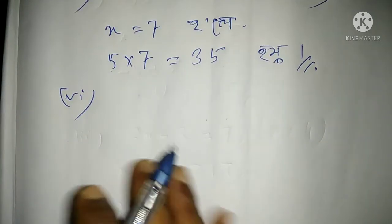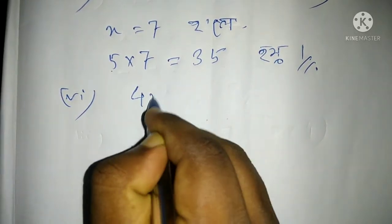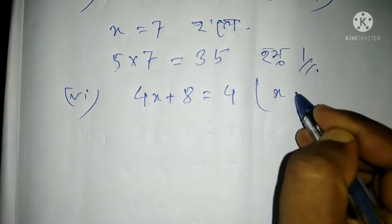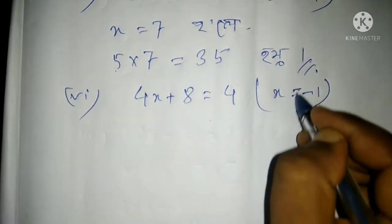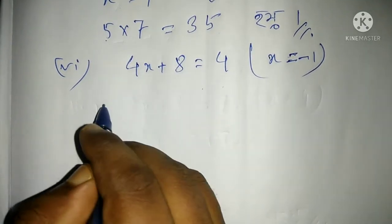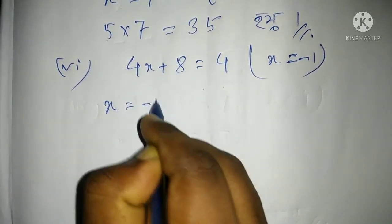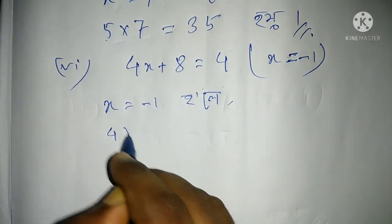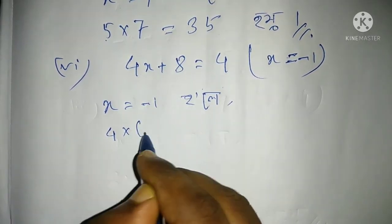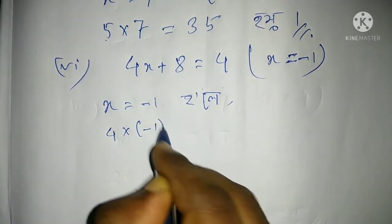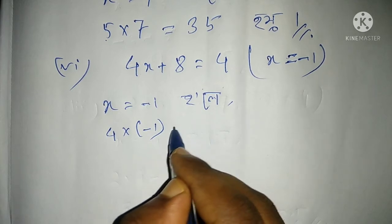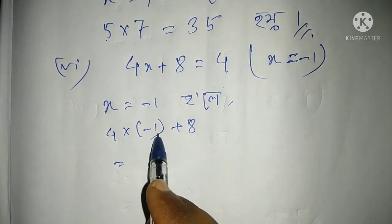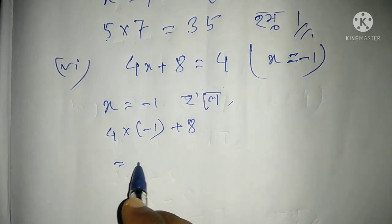Number 2: 4x plus 8 equal to 4. So x equal to minus 1. Let us write x equal to minus 1. We have 4 into x, putting x equal to minus 1. Minus 1 — let us substitute it. Then we have plus 8. What value do we get? Putting minus 1, we get minus 4.